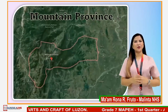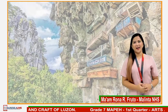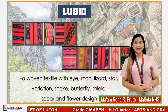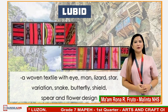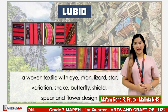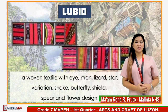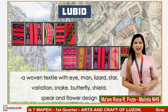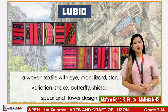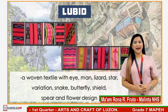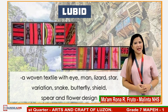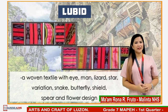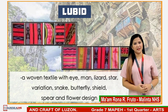Moving now to Mountain Province. Another manually woven textile is called blue beetle. The design includes an eye, man, lizard, star, variation, snake, butterfly, shield, spirit, and flower design. This textile is used as clothing for the natives in Mountain Province. Did you know that we also have mummies? These are called Kabayan mummies, also known as the Ibaloy mummies, Benguet mummies, or fire mummies.